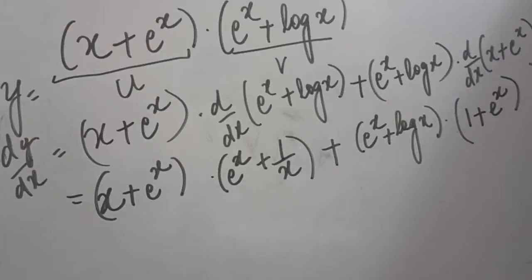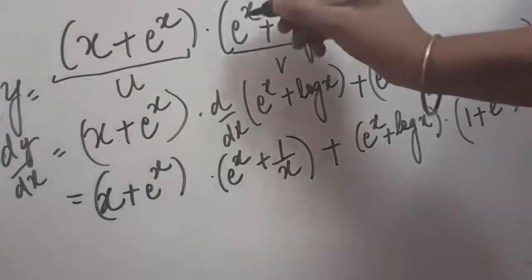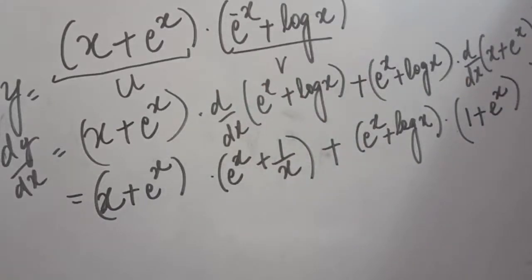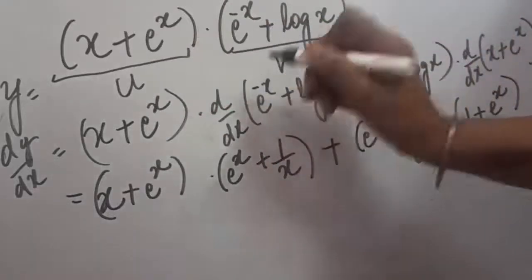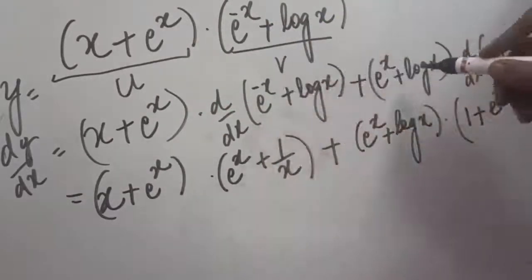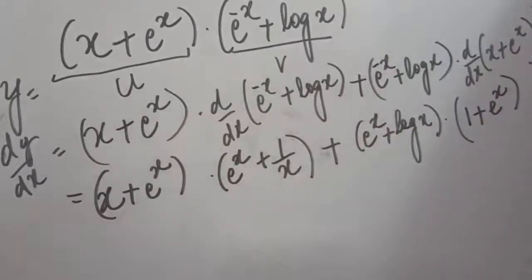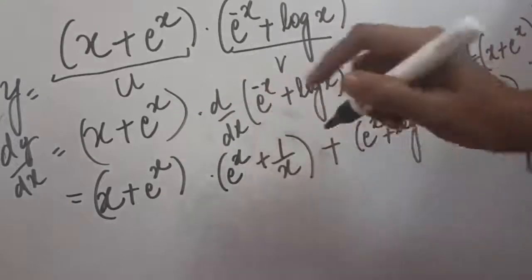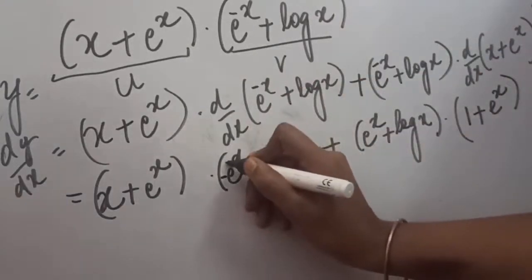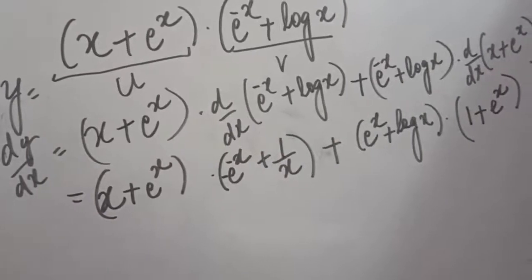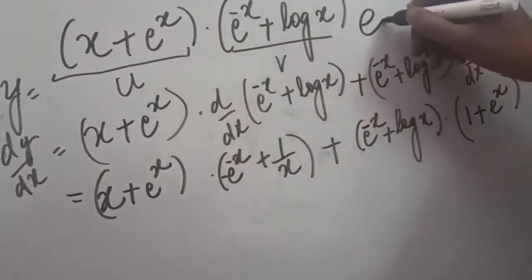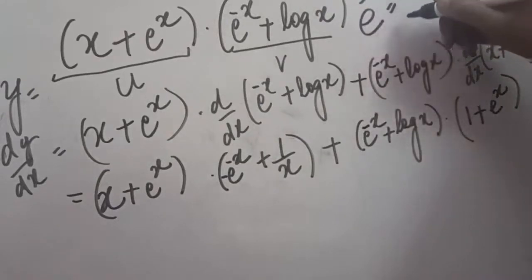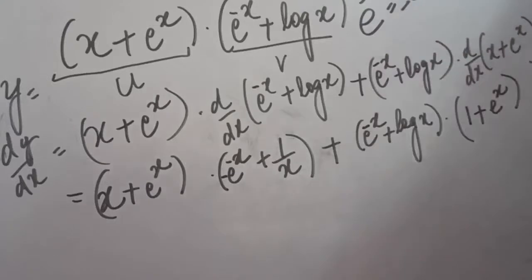Before solving further, one important point: in this question there is e raised to power −x. When we take the differentiation of e^(−x), the answer is −e^(−x); the minus sign comes forward. So wherever you encounter differentiation of e^(−x), the answer is −e^(−x). With this point noted, we substitute accordingly and the rest of the solution proceeds.